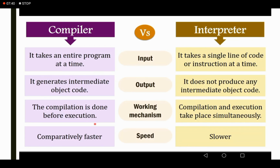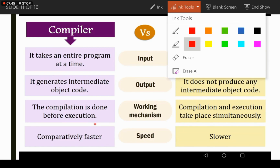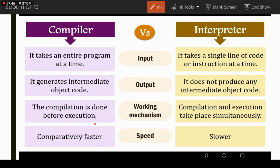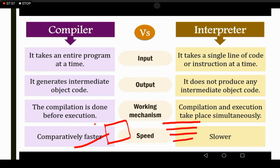Regarding speed: the compiler is comparatively faster, while the interpreter is slower. Since the compiler completes the whole program at once, it is faster, and since the interpreter completes the program line by line, it is slower.